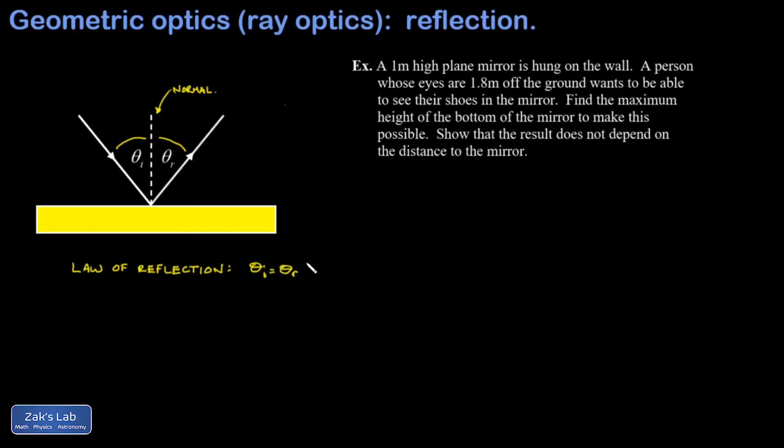And that's just theta incident equals theta reflected. To illustrate how the law of reflection works, we have a simple example. We're told we have a one meter high plane mirror hung on the wall, and a person whose eyes are 1.8 meters off the ground wants to be able to see their shoes in the mirror. Find the maximum height of the bottom of the mirror to make this possible. So apparently if the mirror is hung too high you can no longer see your shoes, which I think makes intuitive sense. The surprising part is underlined here: we want to show the result does not depend on the distance to the mirror.